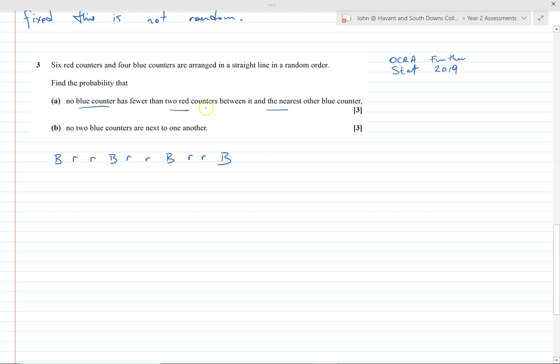So that's the only way to satisfy the requirement in the question. No blue counters has fewer than two red counters in between. That's the only way it could happen. If we took one red down there and put it there, then the condition doesn't hold, and because we've only got four blue ones and we've got six red ones...